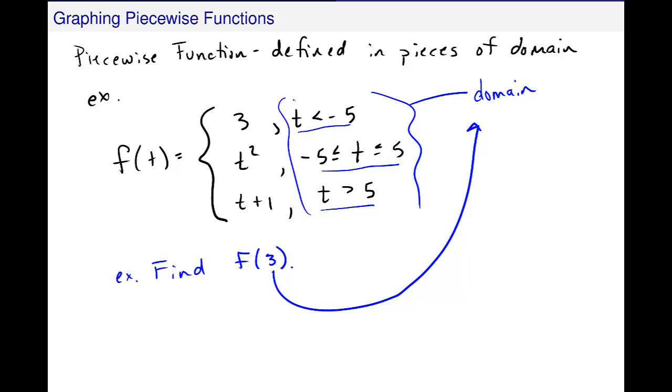Is 3, when I plug it in for t, is 3 less than negative 5? No. So that is not the piece of the function that applies to my particular input. Now, is 3—is negative 5 less than or equal to 3 less than or equal to 5? The answer is yes. 3 is between those two numbers.